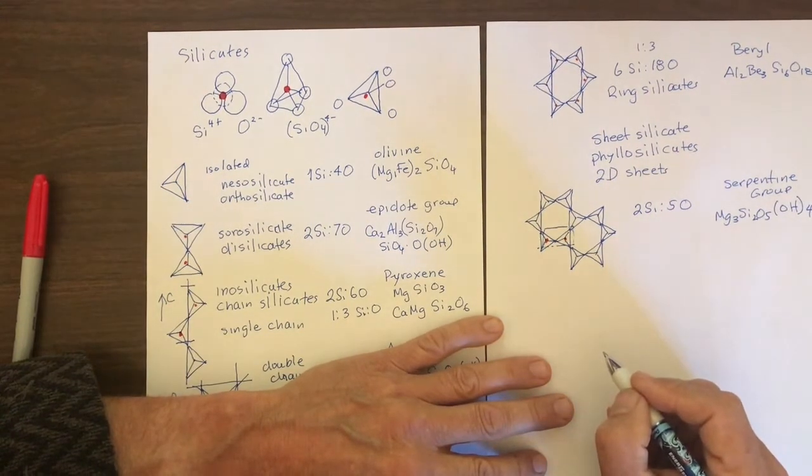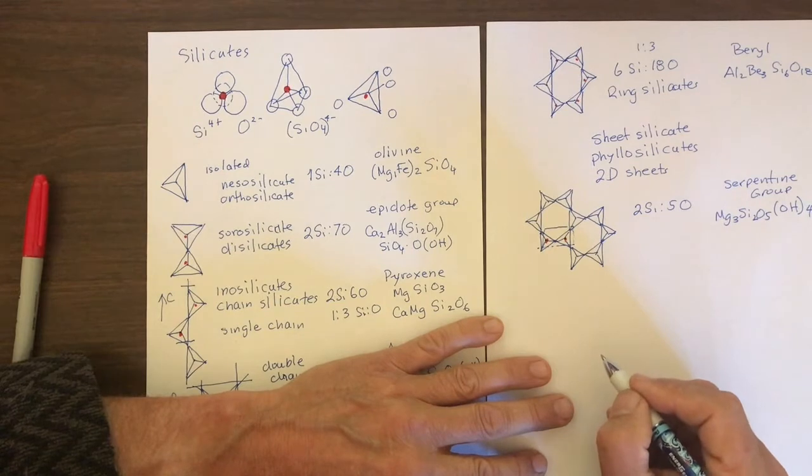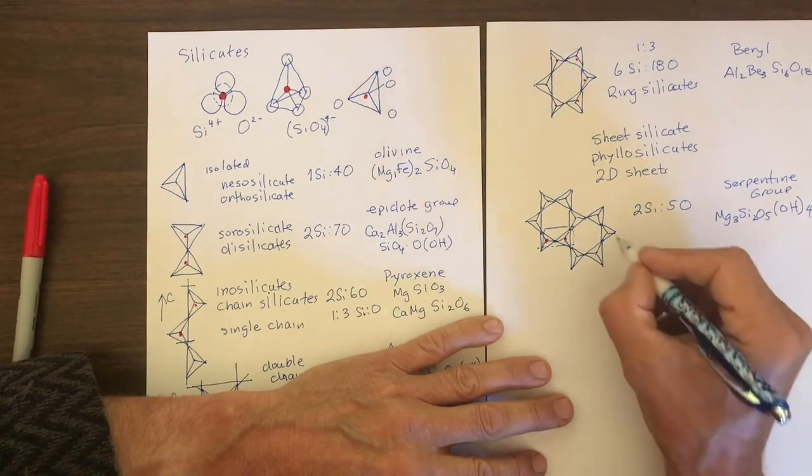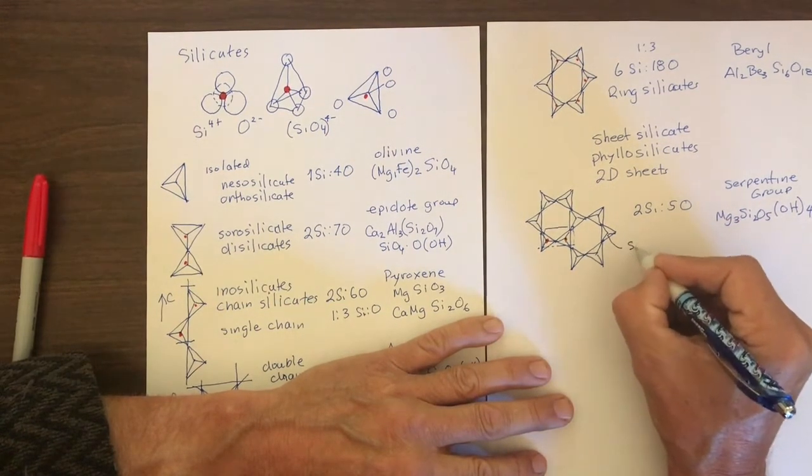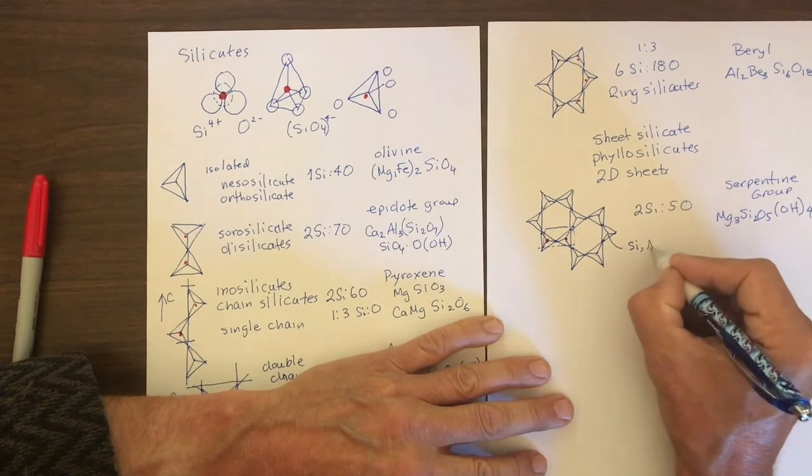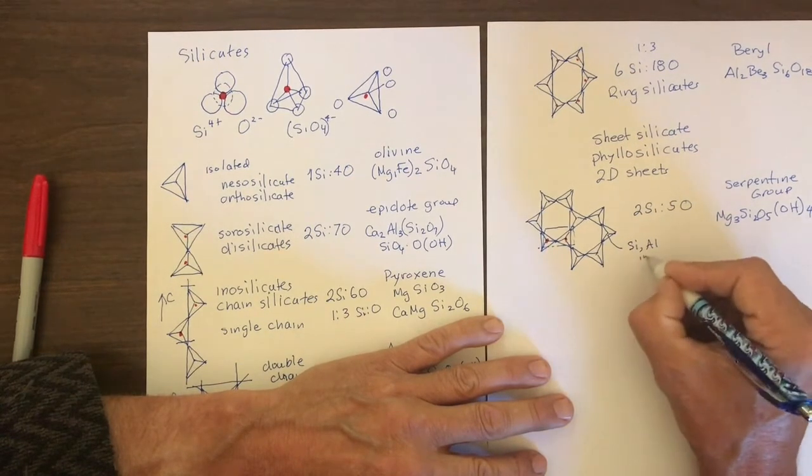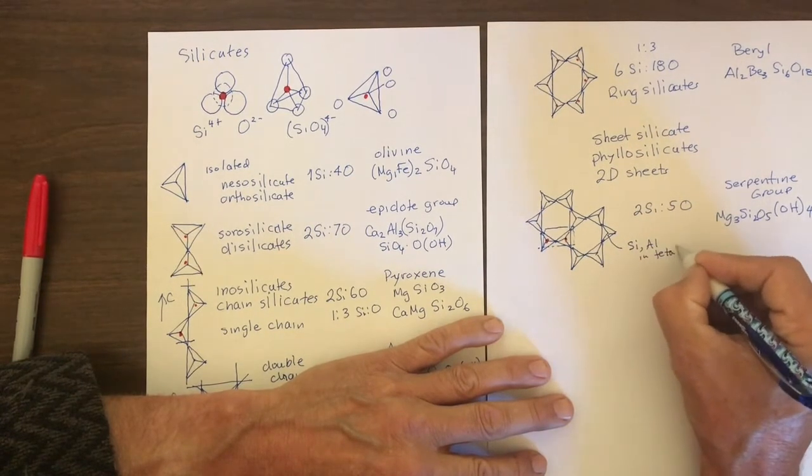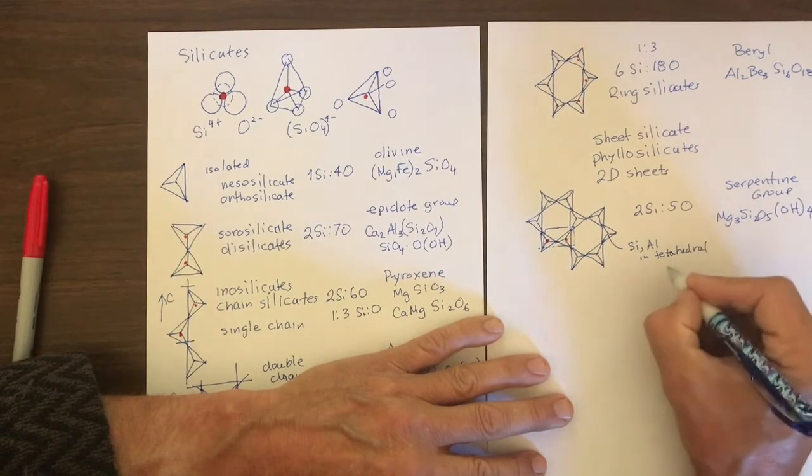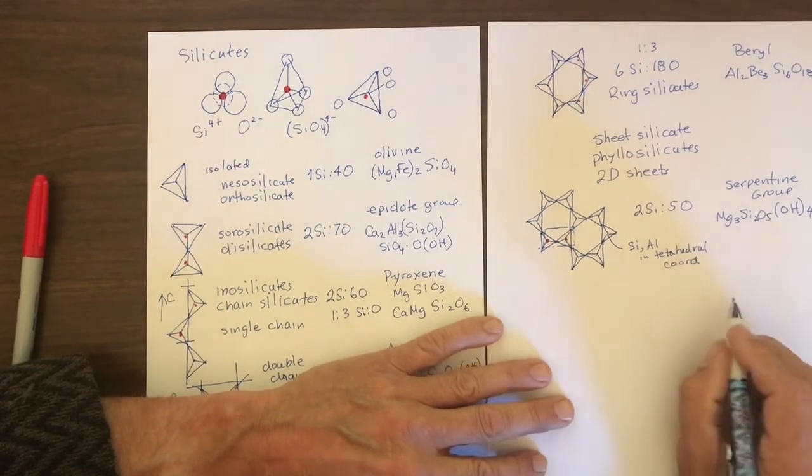More complicated sheet silicates, like micas and chlorite. Some of these tetrahedra have, in addition to silica, they also have aluminum in tetrahedral coordination.